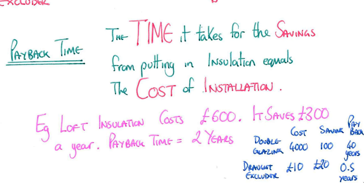For example, it costs 600 pounds to put in loft insulation. If it saves you 300 pounds a year, the payback time is two years. At the end of two years, the savings you've made, which is 300 pounds a year, will equal 600 pounds. After that, you're saving 300 pounds every year, which is good.